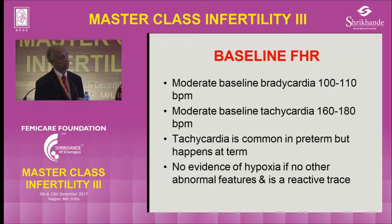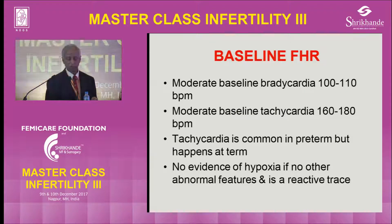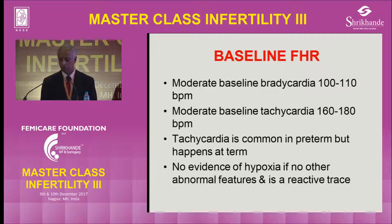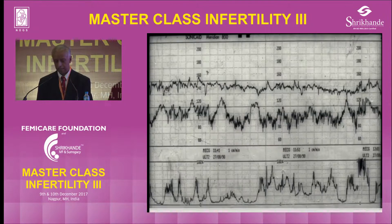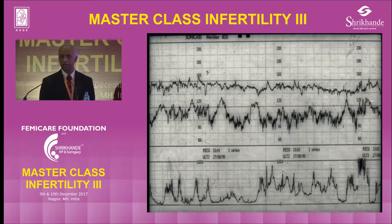To summarize the baseline heart rate: 100 to 110 is moderate baseline bradycardia; 160 to 180 is moderate baseline tachycardia. Tachycardia is common in the preterm but can happen at term, and there is no evidence of hypoxia if there are no abnormal features and the CTG is reactive.